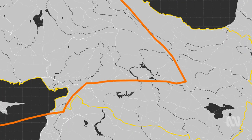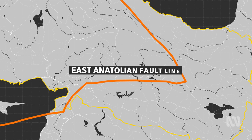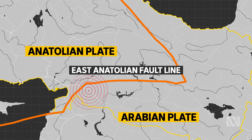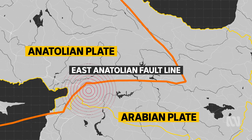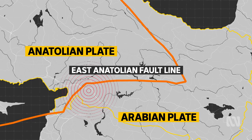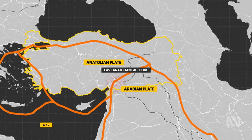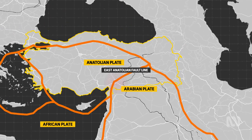Remember this line mentioned at the start? That is the East Anatolian fault line, and it's where the first big quake happened as these two plates slid past each other. Part of Turkey actually sits at the intersection of three different plates. The African plate is moving northward into the Arabian, and it means this part of the world is quite seismically active.